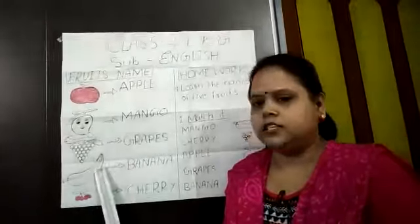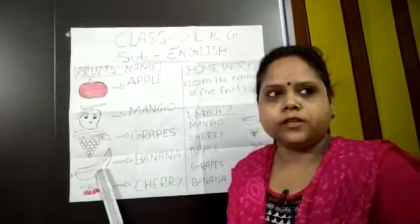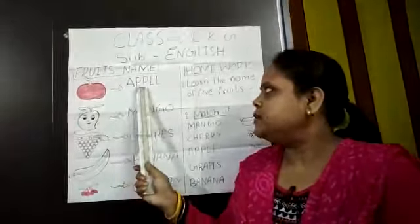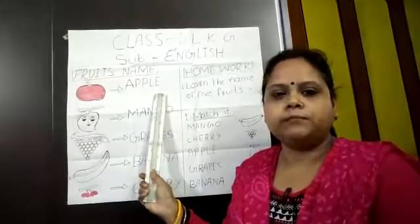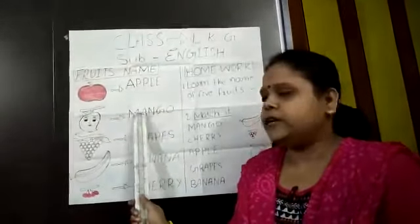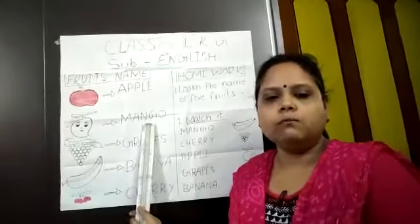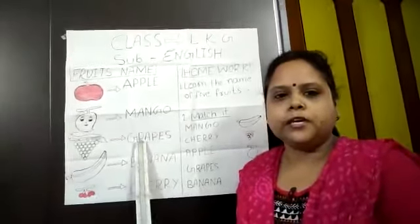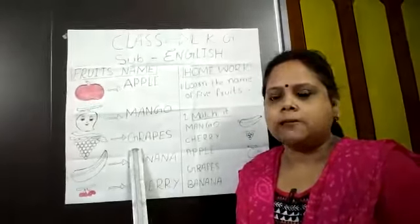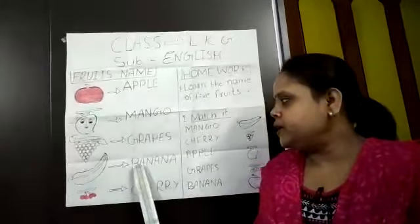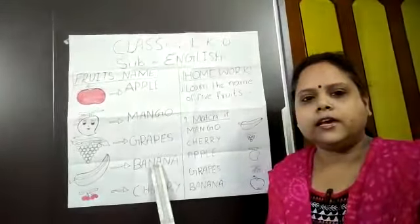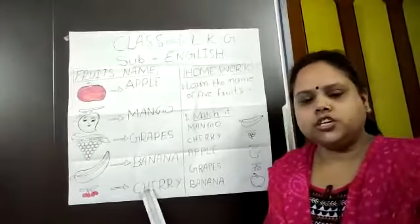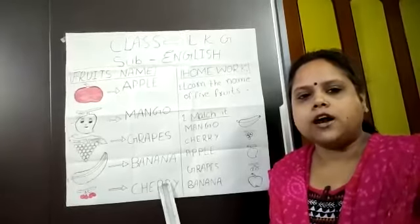You have to learn these fruit names. Now spell them: A-P-P-L-E — Apple. M-A-N-G-O — Mango. G-R-A-P-E-S — Grapes. B-A-N-A-N-A — Banana. C-H-E-R-R-Y — Cherry.